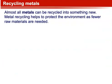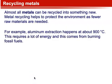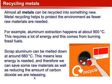Recycling Metals. Almost all metals can be recycled into something new. Metal recycling helps to protect the environment as fewer raw materials are needed. For example, aluminum extraction happens at about 900 degrees Celsius and requires a lot of energy, which comes from burning fossil fuels. Scrap aluminum can be melted down at around 660 degrees Celsius. This means less energy is needed, and therefore we can save raw materials as well as reducing the amount of carbon dioxide we are releasing.